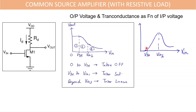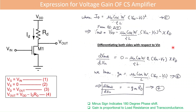The rightmost curve shows transconductance as a function of input voltage. In the saturation region, transconductance increases as VIN increases. Beyond a certain VIN level, the transistor moves into the linear region, so resistance increases and transconductance decreases.